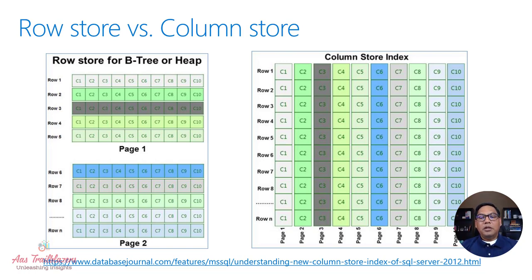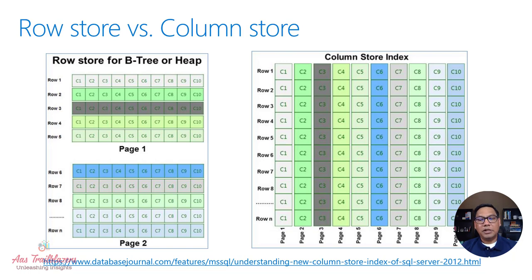The second reason is the SQL engine uses compression aggressively to reduce the amount of storage space needed to store the same set of data. This is possible because for a given column, the values are likely to be highly repeatable, and because of this redundancy, there is a higher chance for better compression.